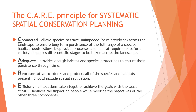A connected plan allows species to travel unimpeded, or relatively so, across the landscape to ensure long-term persistence of the full range of a species' habitat needs. This allows biophysical processes and habitat requirements for a variety of species at different life stages to be linked across the landscape. An adequate plan provides enough habitat and species protections to ensure their persistence through time. A representative plan captures and protects all of the species and habitats present, including spatial replication. And an efficient plan means all locations taken together achieve the goals at the least cost, reducing the impact on people while meeting the objectives of the other three components.